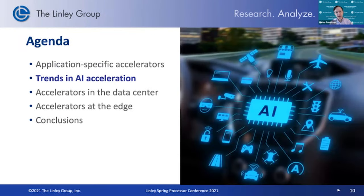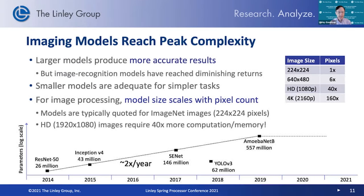I want to transition now into some trends we're seeing. The industry is evolving very quickly, and we're seeing the kinds and sizes of models changing over the last few years. As neural networks become larger, they become more complicated, produce more accurate results, and are able to solve bigger problems. For imaging models — with ResNet coming out in 2014 and successive iterations since — we've gotten to the point where image recognition is a pretty well-solved problem.